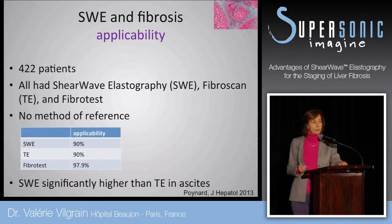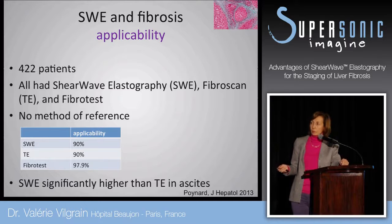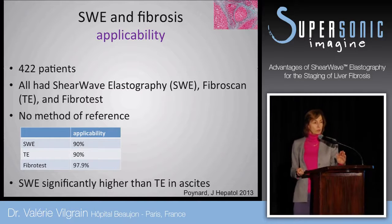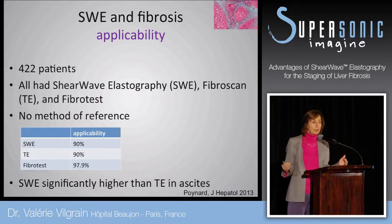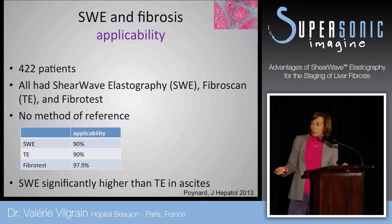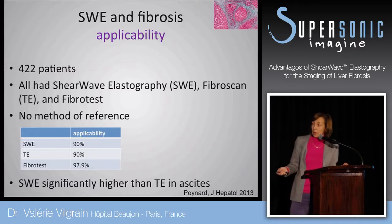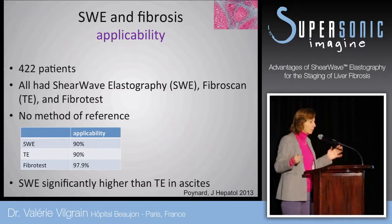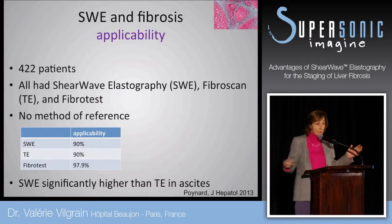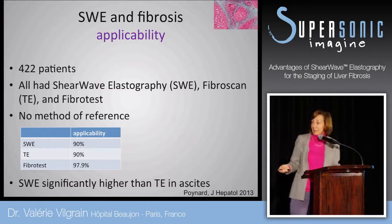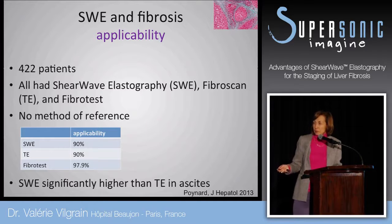Regarding applicability, this is the largest study I have found — more than 400 patients — all having shear wave elastography, fibroscan, and fibro test. The key question was whether these techniques are applicable at large scale. The answer is yes: transient elastography and shear wave elastography had an applicability of 90% of cases, which is really great — slightly lower than fibro test, which is a blood sample, so should approach 100%.